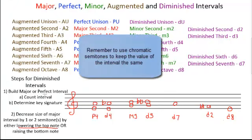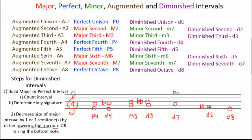Now let's try examples where we have to do the first step. Counting up seven from an A, we write in a G. Next, we determine the key signature of the bottom note — A major has three sharps: F sharp, C sharp, and G sharp. The top note is a G, and in our key signature we have G sharp, so we write in a sharp to make it a major interval — our major seventh. Now we lower the top note by two semitones because it's a major interval. From G sharp, lowering by one semitone gives a minor seventh on G natural; lowering by two gives a diminished seventh on G flat. So from A to G flat we have our diminished seventh.